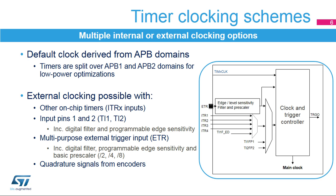The external trigger input, or ETR, can be configured as an external clock, with a digital filter, programmable edge sensitivity, and a first basic prescaler stage to reduce the frequency of incoming signals if needed. Lastly, the quadrature signals from an encoder can be processed to provide a clock and a counting direction, as described later in this presentation.